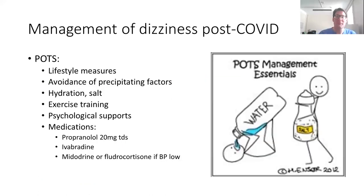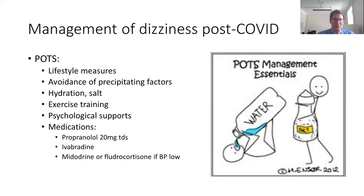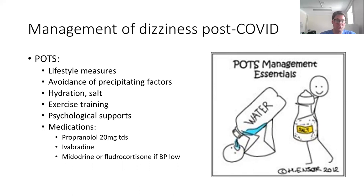For POTS specifically: very similar lifestyle measures — salt and water to stay well hydrated, exercise training, practicing getting up and down, sleeping slightly propped up, fitness or rehab classes. Psychological support is quite important, with significant overlap with chronic fatigue syndromes. If all that fails, low dose propranolol 20mg three times a day can be quite effective. Ivabradine can help with the tachycardia. If there is a blood pressure component with dropping blood pressure, midodrine as a peripheral vasoconstrictor or fludrocortisone as a salt and water retainer are options.